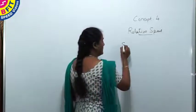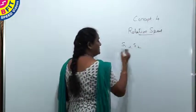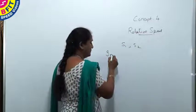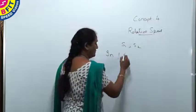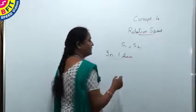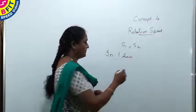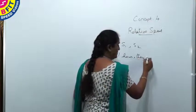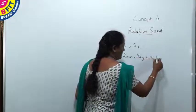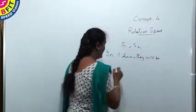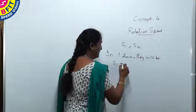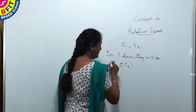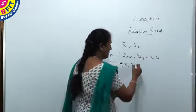If the speed of two persons is S1 and S2, then in one hour they will be S1 plus or minus S2 kilometers apart. This is the main concept of relative speed, and based on this we will do the working.